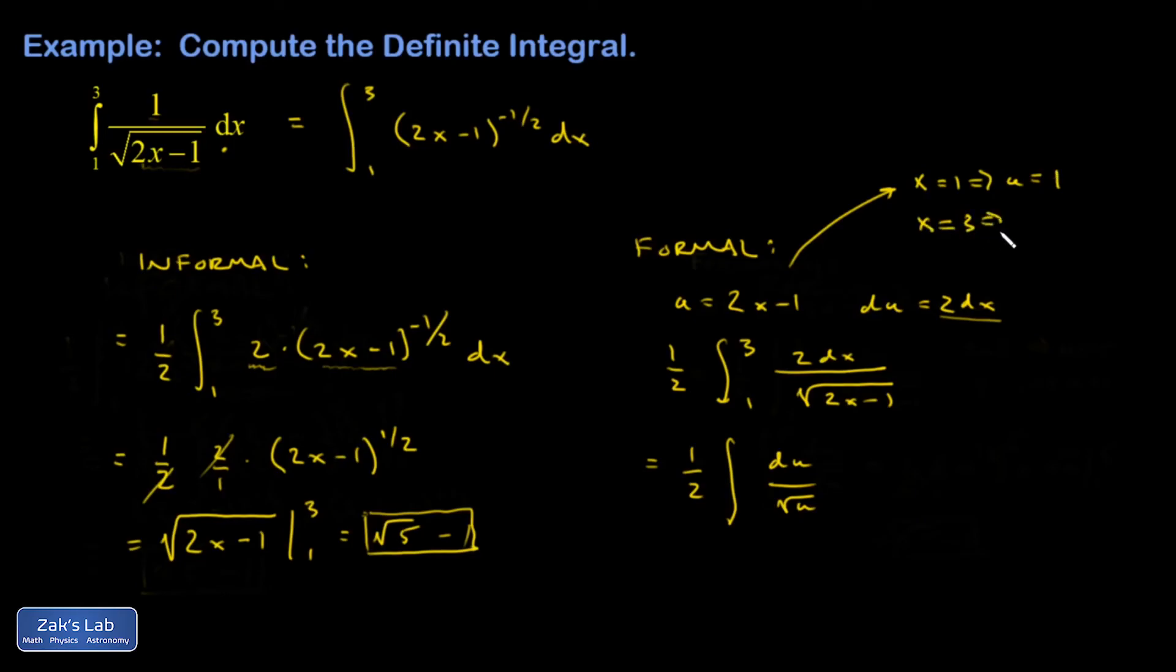x equals 3 implies that u equals 2 times 3 minus 1. That's 5. And so, this integral goes from 1 to 5.